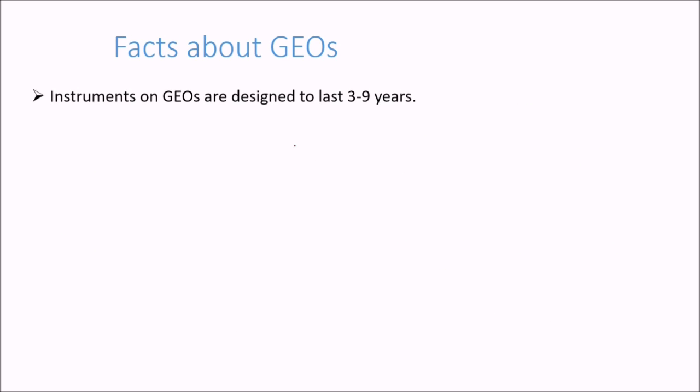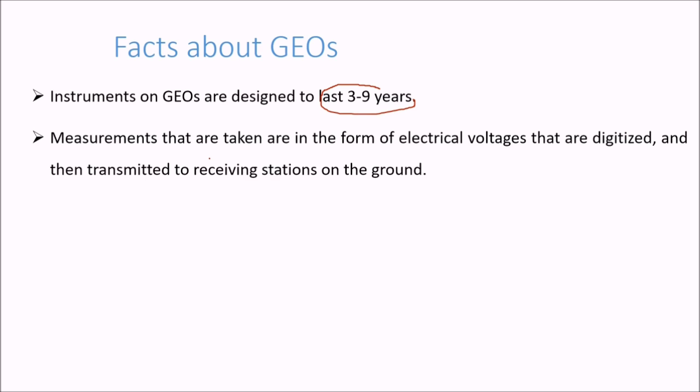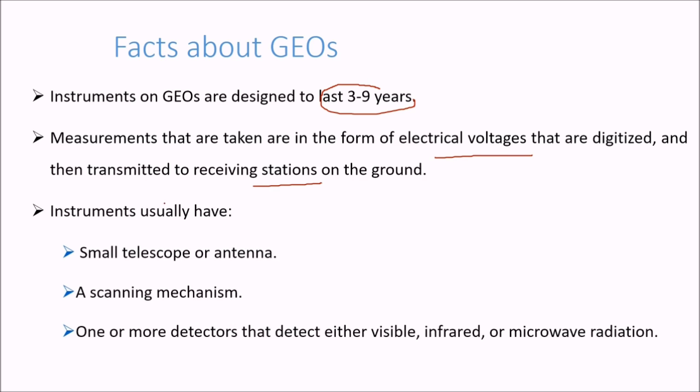What are the facts about GEOs? The instruments on GEOs are designed to last from 3 to 9 years. Measurements that are taken are in the form of electrical voltages that are digitized and then transmitted to receiving stations on the ground. Instruments we usually have: first, a small telescope or antenna, a scanning mechanism, and one or more detectors that may detect visible, infrared, or microwave radiation.